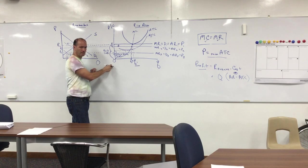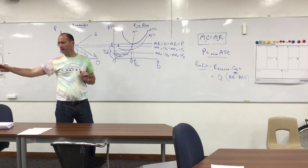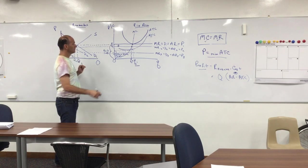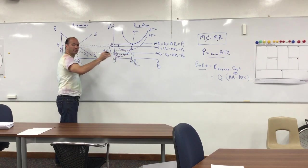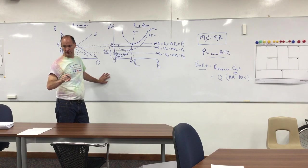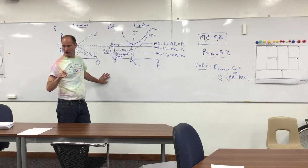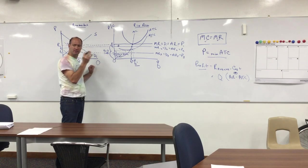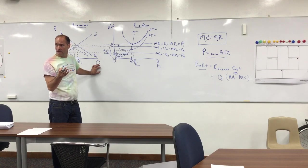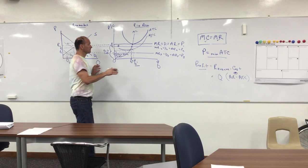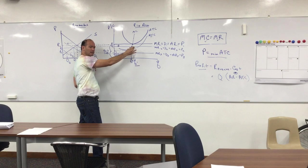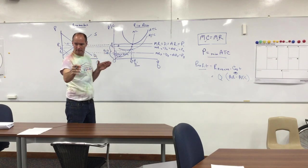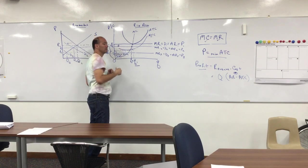Shutdown means you produce zero units of output in the short run, and then you exit in the long run if the price remains low. If the price of the good is less than the minimum of average variable cost, the firm shuts down in the short run and exits in the long run. Its loss in the short run will be exactly equal to its fixed cost. Summary: if price is greater than AVC but less than ATC, it produces to minimize loss but exits in the long run. If price is greater than ATC, it's making a profit.